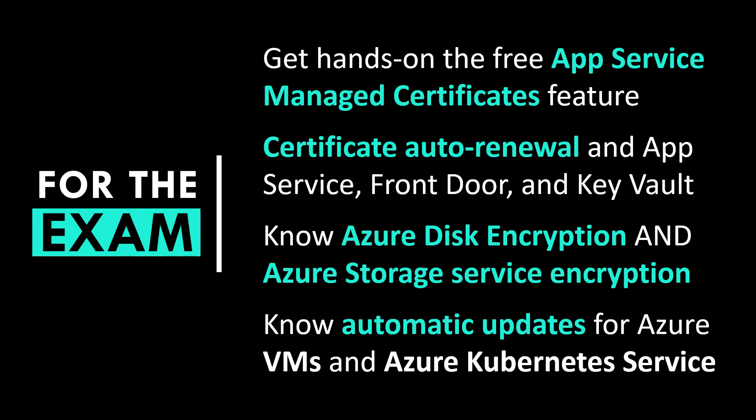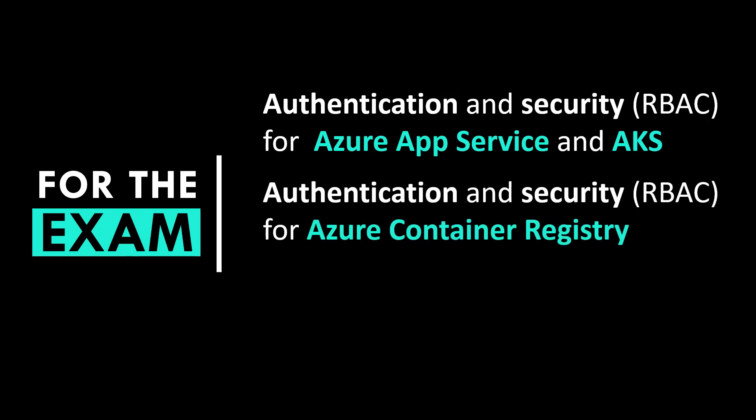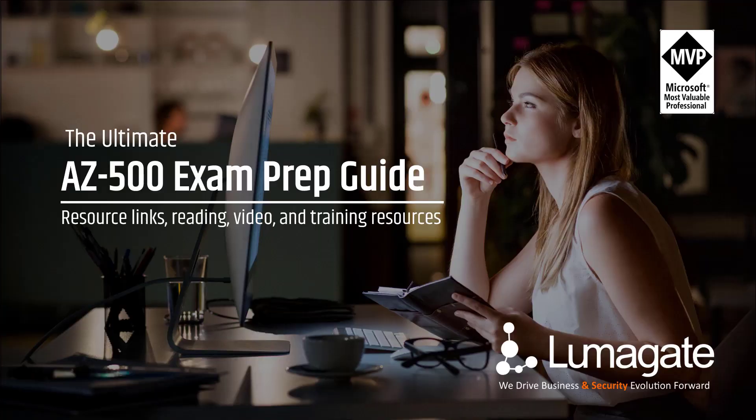For authentication and security, think role-based access control for Azure App Service and AKS — when you see RBAC, make sure you look at the roles related to those services. Authentication and security around Azure Container Registry is also important. And for automatic updates, focus on the AKS node cluster upgrade process.